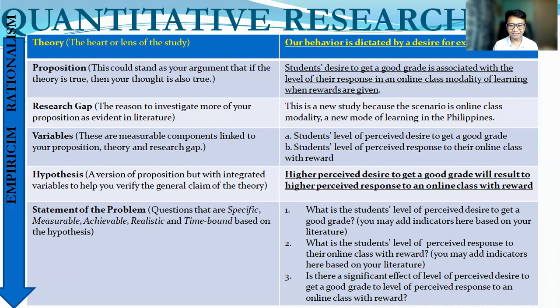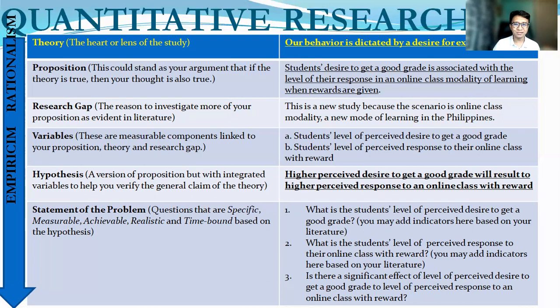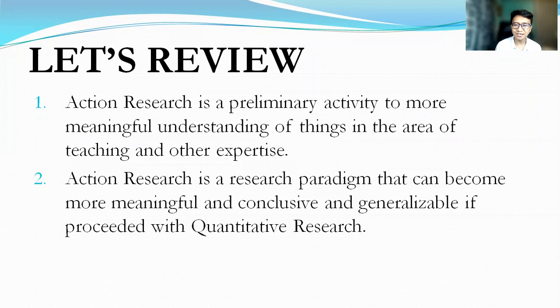For the title, you can combine the two variables: perceived desire to get a good grade and perceived response to an online class with reward. The title should be the last thing you determine, because quantitative research begins from general to specific, from theory to hypothesis testing. To summarize: action research is a preliminary activity to more meaningful understanding of things in the area of teaching and other expertise. Action research is a research paradigm that can become more meaningful, conclusive, and generalizable if proceeded with quantitative research.